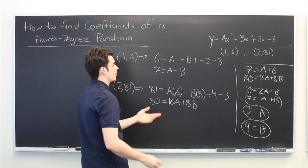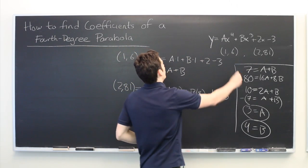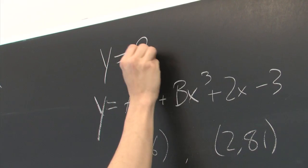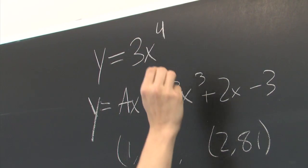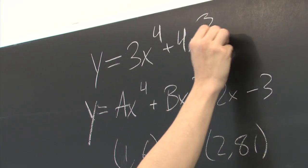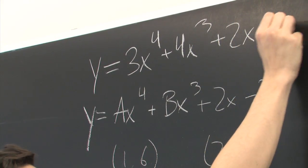And there we have it. Now we have all of the coefficients of our fourth degree parabola. Y is equal to three x to the fourth plus four x to the third plus two x minus three.